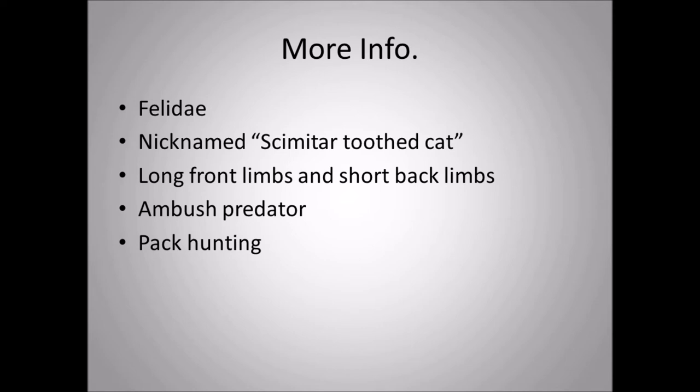Homotherium belongs to the Felidae — that's the cat family — and it is nicknamed the scimitar-tooth cat. The canines of Homotherium are shorter than Smilodon's, which probably means they had a more powerful bite. The nickname comes from the fact that their teeth look like the famous dagger, the scimitar. Other features include long front limbs and short back limbs, which is very common amongst the saber-tooth cats and scimitar-tooth cats.